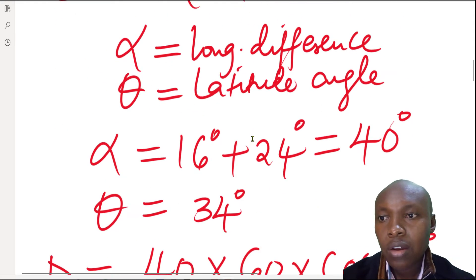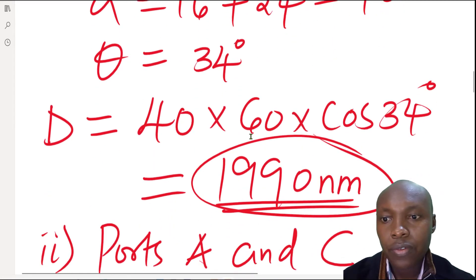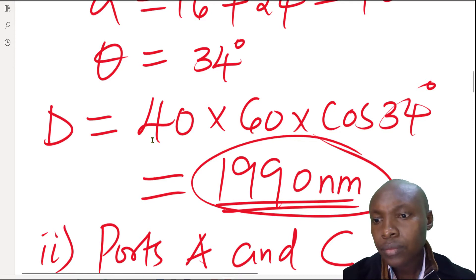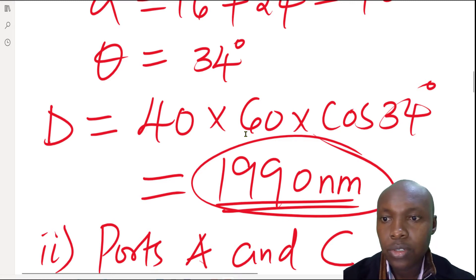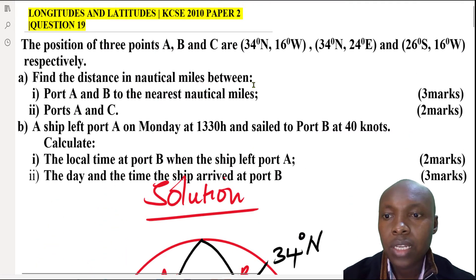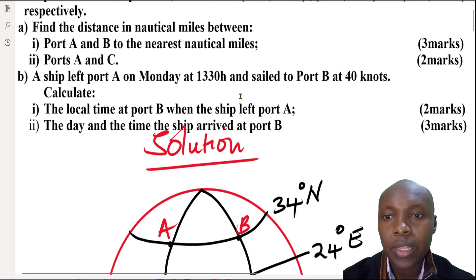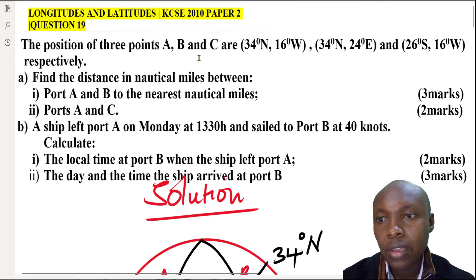The latitude angle where both lie is 34 degrees north, so θ = 34 degrees. Substituting into the formula: distance = 40 × 60 × cos(34°), which gives 1990 nautical miles, correct to the nearest nautical mile as required.